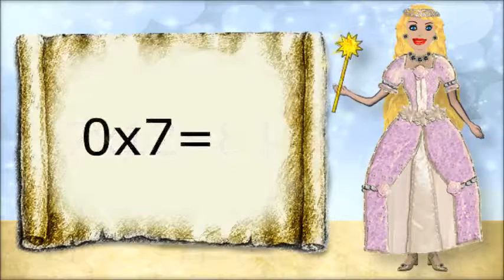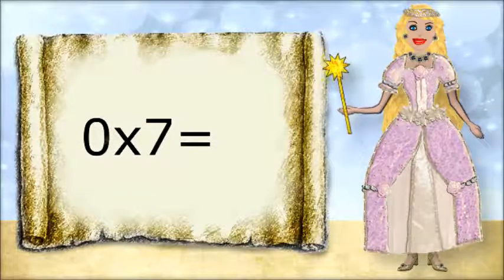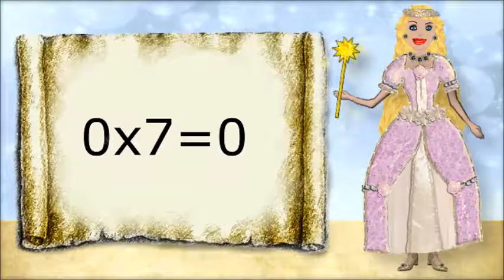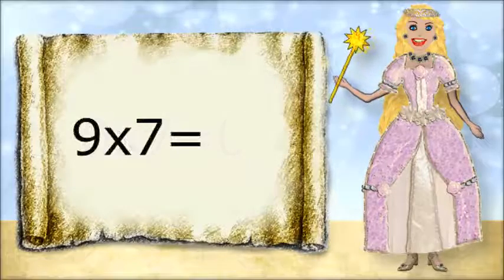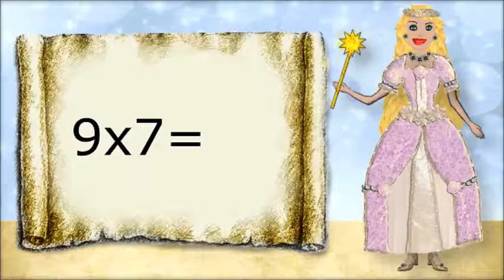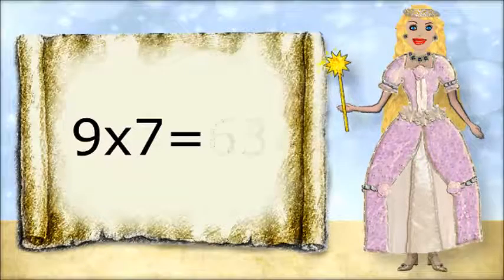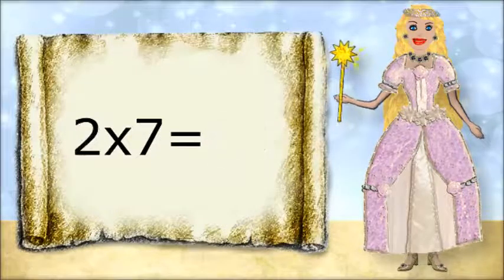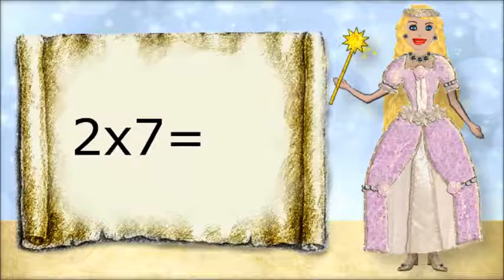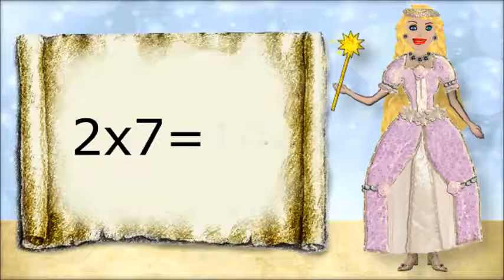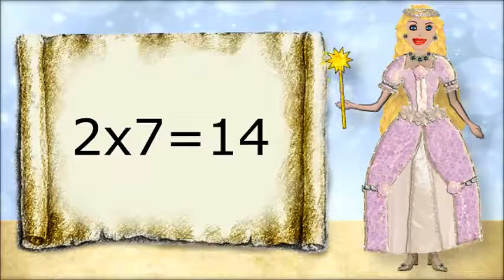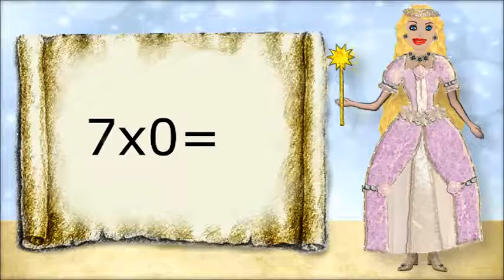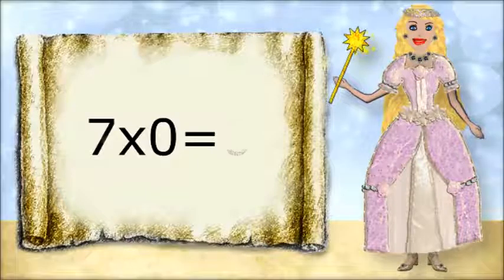0 times 7 equals 0. 9 times 7 equals 63. 2 times 7 equals 14. 7 times 0 equals 0.